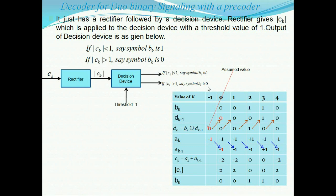The transmitted CK values are −2, −2, 0, 0, −2. At the receiver, the rectifier gives |CK| = 2, 2, 0, 0, 2. Applying the decision rule: values greater than 1 are decided as binary 0, and values less than 1 are decided as binary 1, correctly recovering the original binary sequence.